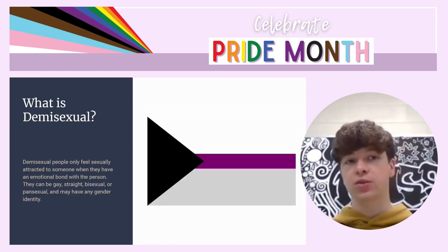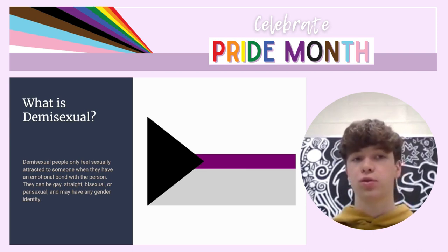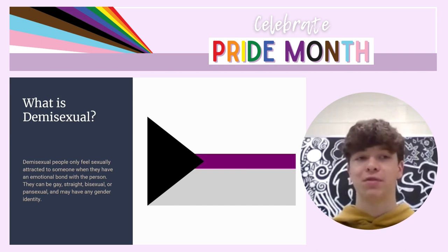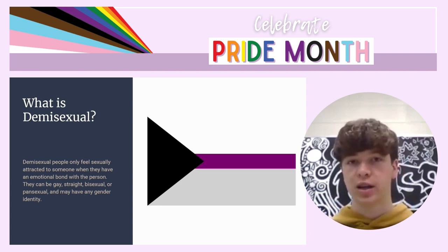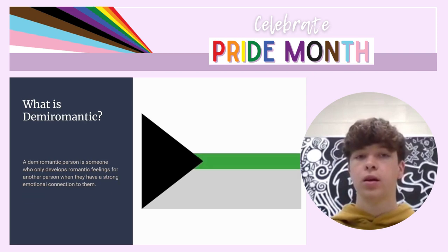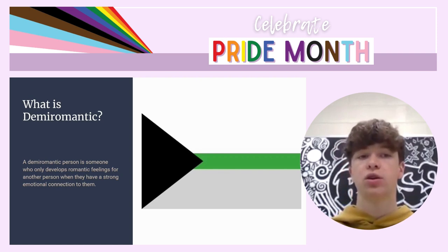And we have demisexual. It's like asexual, but demisexual people only feel sexually attracted to someone when they have an emotional bond with that person. They can be gay, straight, bisexual, or pansexual, and any gender identity — they only develop sexual attraction to someone if they've known them for a long time or have an emotional connection with them. And same thing with aromantic: a demiromantic person is someone who only develops romantic feelings for another person when they have a strong emotional connection to them.